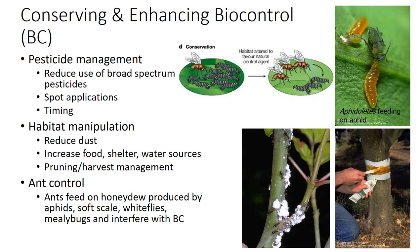Conservation and enhancement of established natural enemies include any activities that improve survival, dispersal, and reproduction of resident natural enemies. Many approaches can be taken. Elimination or reduction of pesticides toxic to natural enemies is an important way of improving biological control. When pesticide applications are necessary, selective materials are applied so that natural enemies are least likely to be affected.